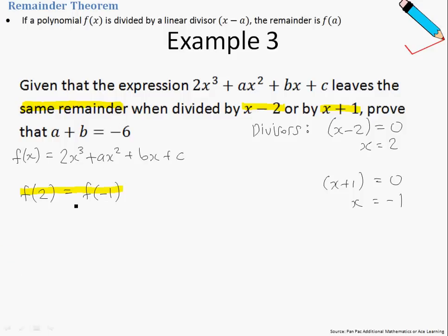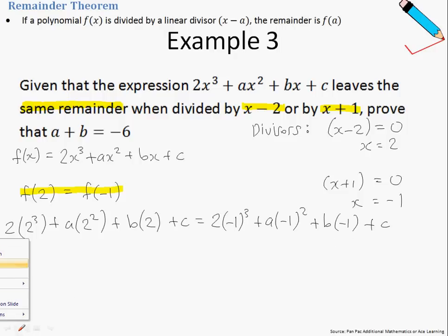The next thing we're going to do is perform our substitution. On the left-hand side, we will substitute x=2, and on the right-hand side, we will substitute x=-1. Since we have c on both sides of the equation, we can eliminate the c, so just minus c on both sides.